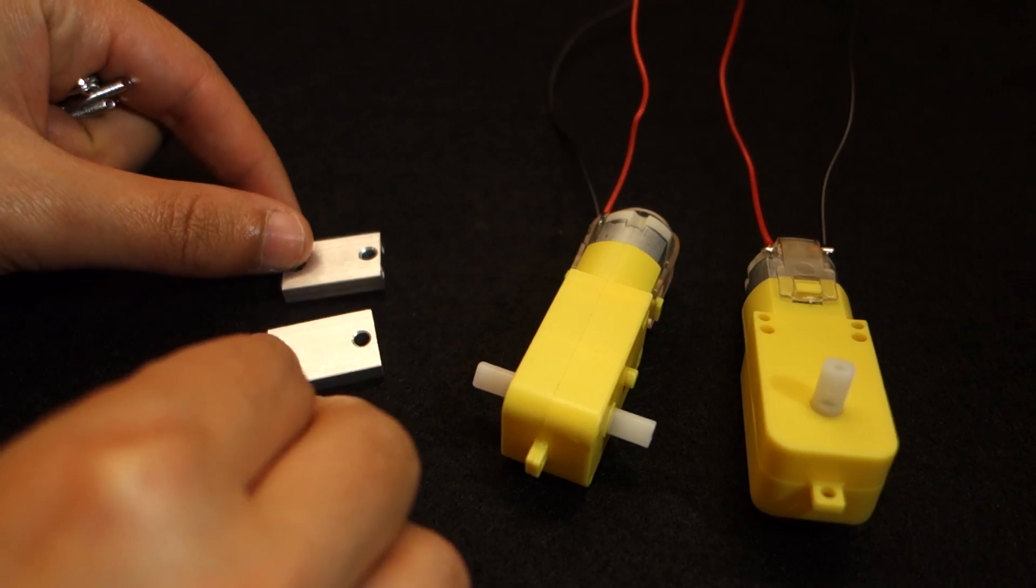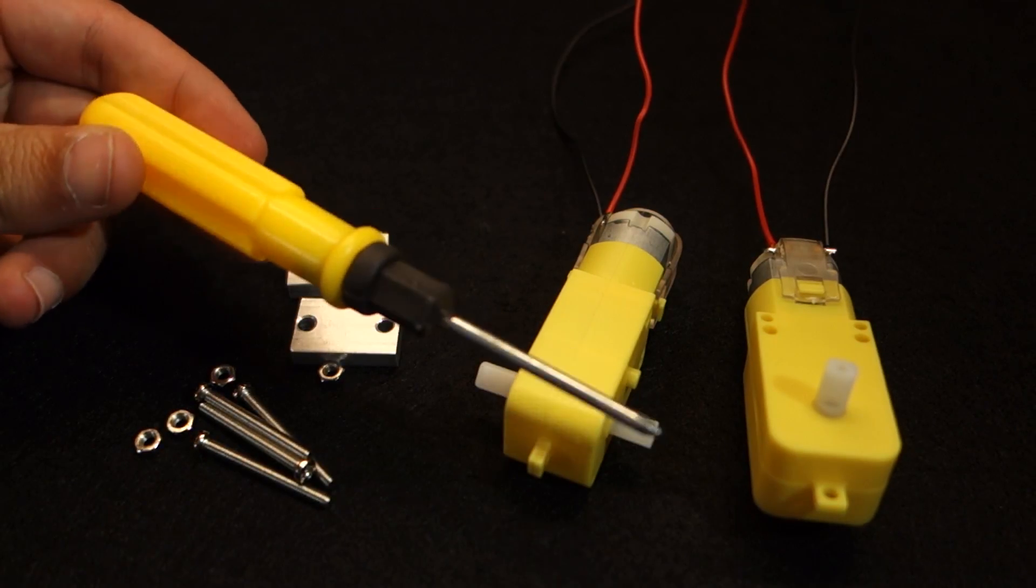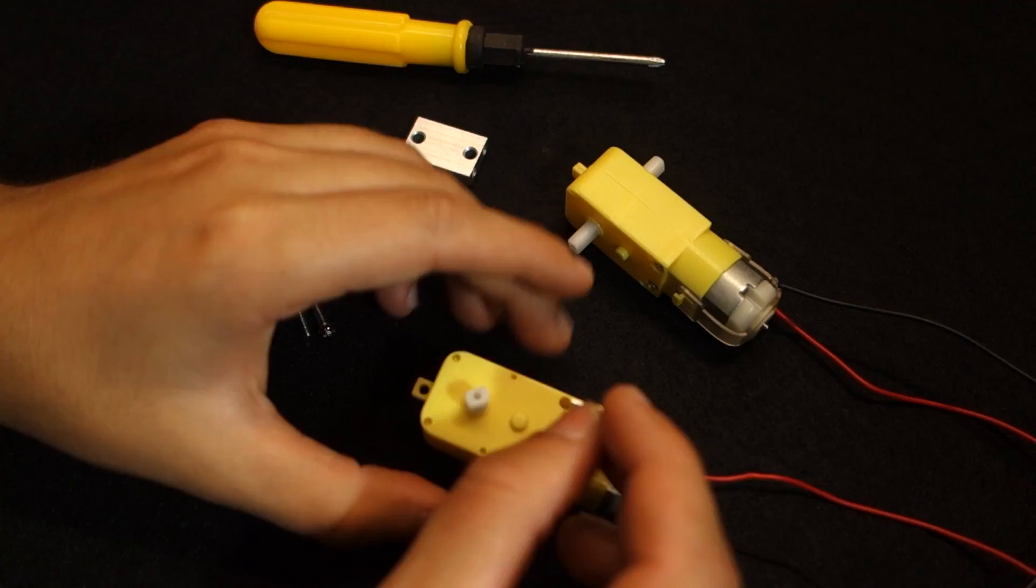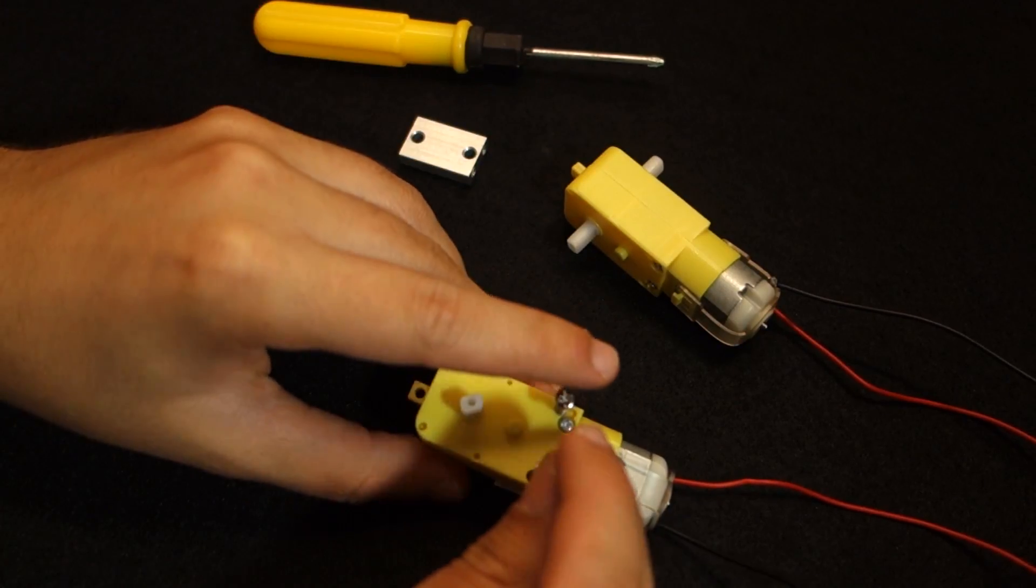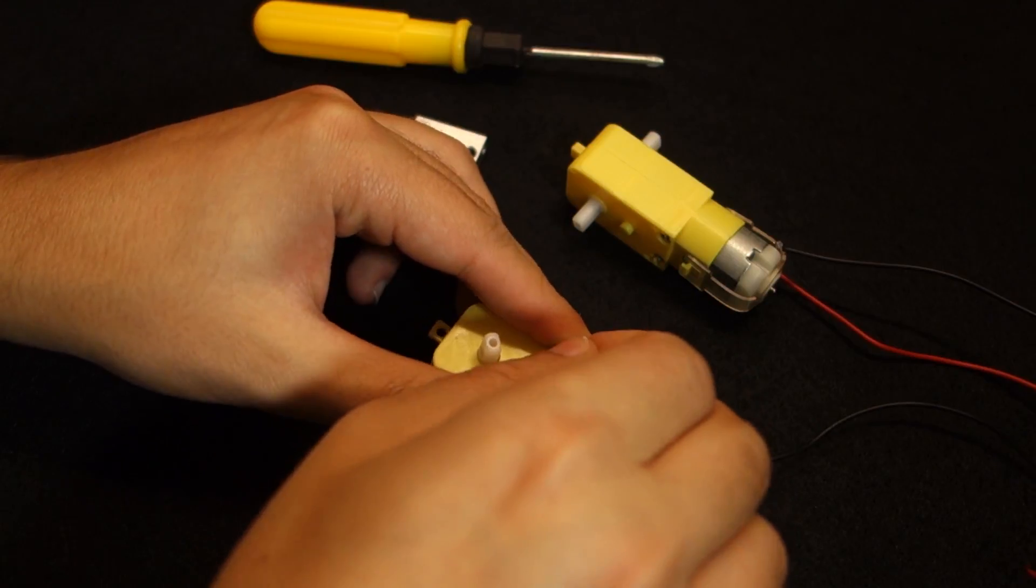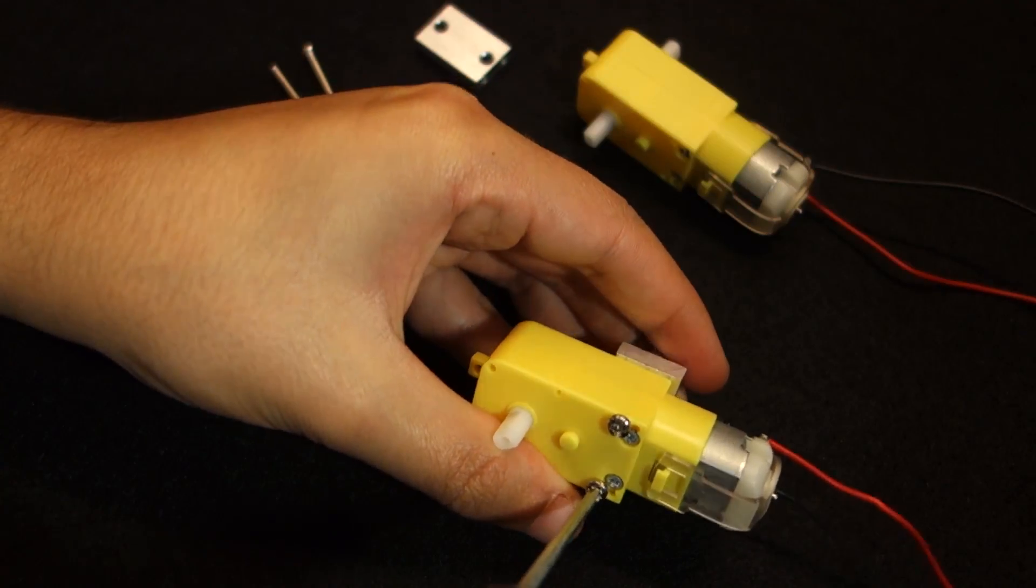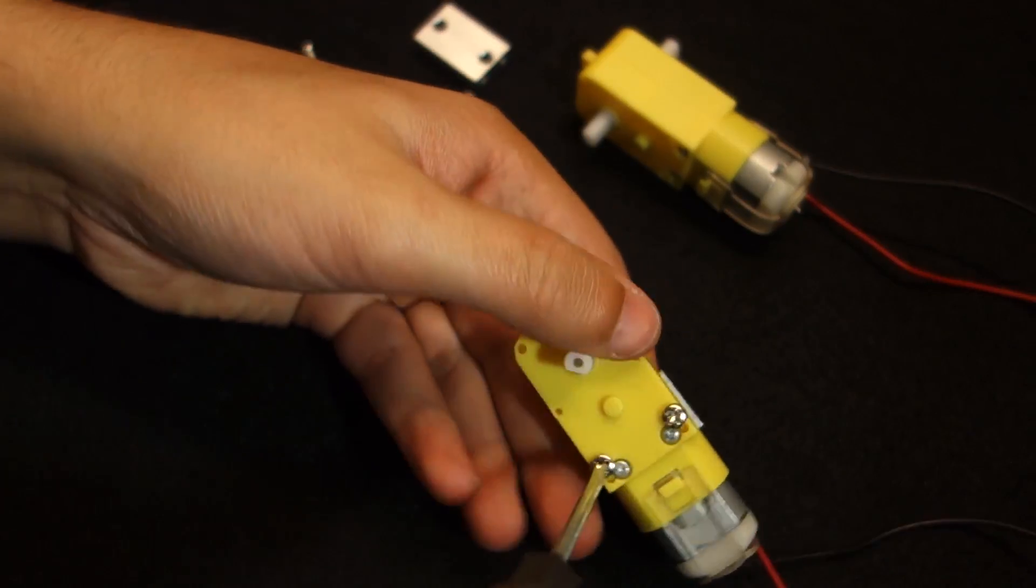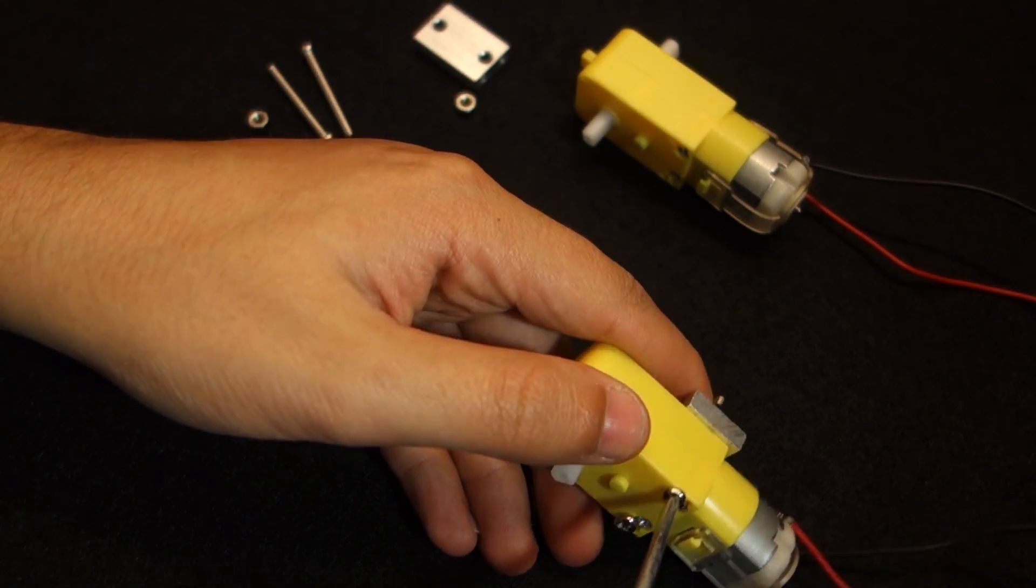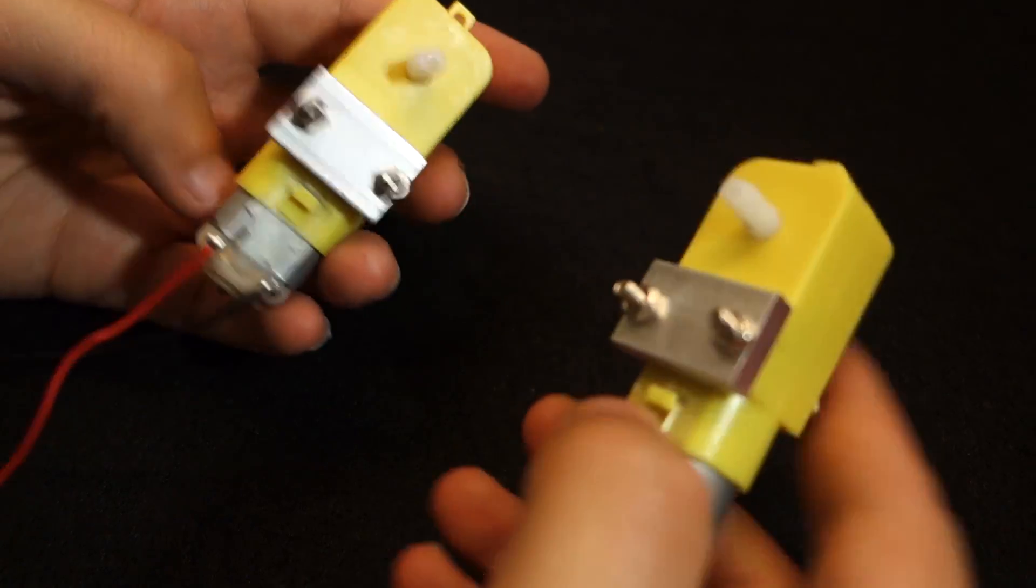Now, you need a screwdriver, bolts and screws and those metal pieces. Start by attaching the metal pieces to the DC motors. Here's how they look like after this step.